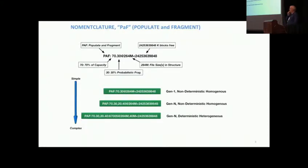When we talk about population and fragmentation, there are numerous ways that you could populate and fragment a file system. We came up with this nomenclature. This nomenclature basically allows us to write things down for the way we're testing things in a lab. We call it PAF, P-A-F, which stands for populate and fragment. You can see here at the bottom where it says Gen 1 non-deterministic homogeneous all the way down to Gen N deterministic heterogeneous. By homogeneous, we mean a file system data structure that's made up of all the same size files. By Gen 1, we mean we make one pass. Non-deterministic means we're using a pseudorandom way of selecting what files we remove in the data structure to fragment the file system.